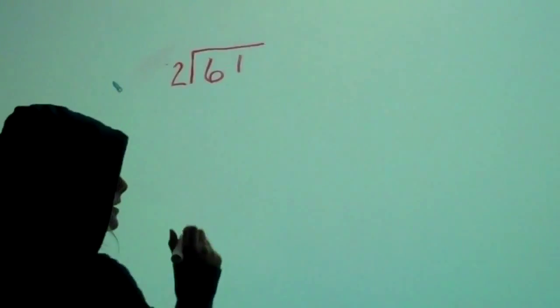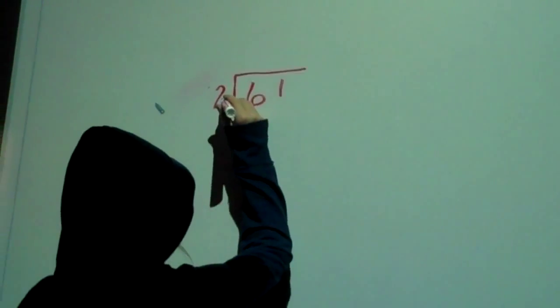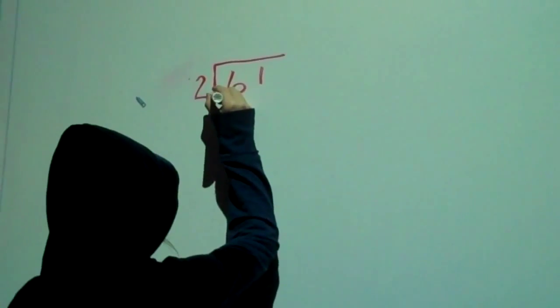Our thing was zeros in the quotient, and right now we're doing a problem of 61 divided by 2.